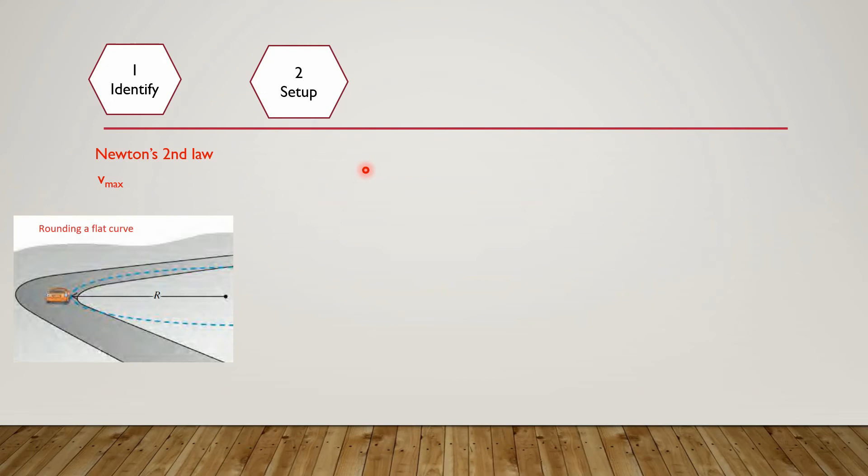Next we have to draw the free body diagram of the car. We place a dot for this car, and one force is the gravitational force acting downward. This is the weight of the car, W equals mg. The other force is the normal reaction of the road in the upward direction, and this normal reaction is n.